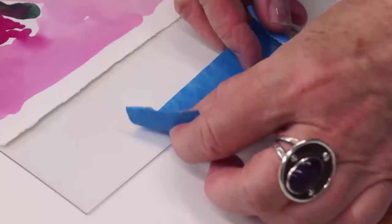To begin I like to tape the plate down. I'm going to use the original watercolor. I'm going to slide it under the plate and I'm going to tape the other side just so that it doesn't move while I'm working.